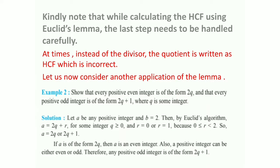Let a be any positive integer and b equal to 2. By applying Euclid's Division Lemma, we can write a is equal to 2q plus r, where 0 is less than or equal to r, which is less than 2. So r can be either 0 or 1. Putting r equal to 0 gives a equals 2q, and putting r equal to 1 gives a equals 2q plus 1. If a is of the form 2q, it is even. Therefore, any positive odd integer is of the form 2q plus 1.